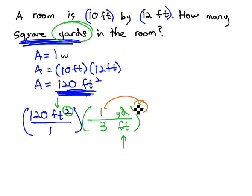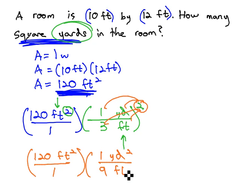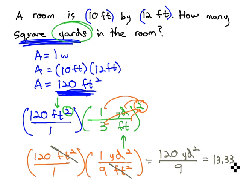Order of operations has us square everything inside the parentheses, including the units first. This gives us 120 square feet over 1, times 1 square yard over 9 square feet, and then the square feet divide out. Multiplying across, we get 120 square yards over 9, and 120 over 9 comes out to be about 13.33 square yards in this 10 foot by 12 foot room.